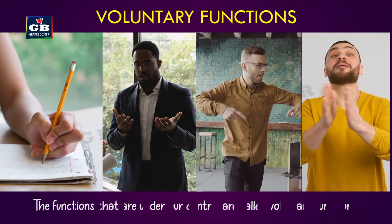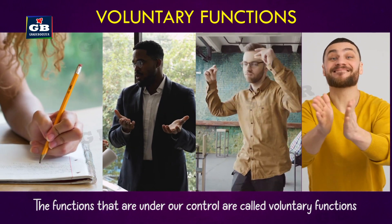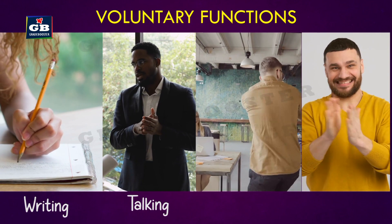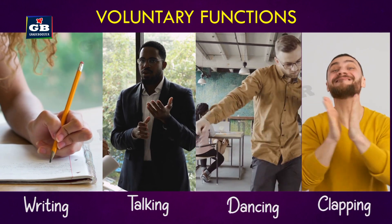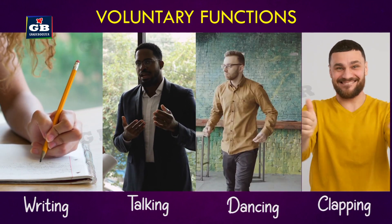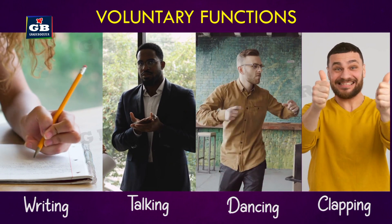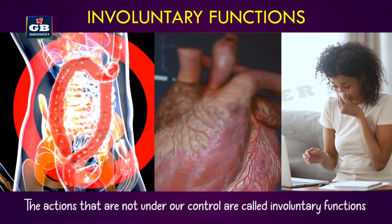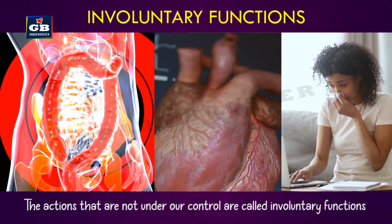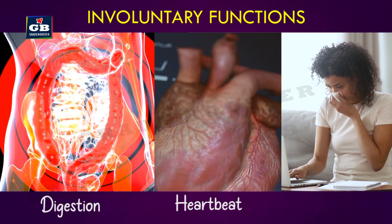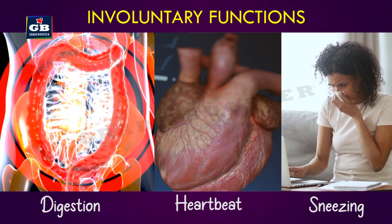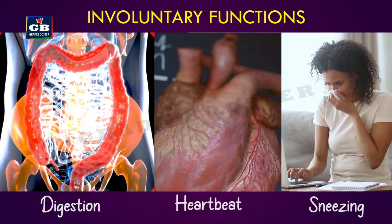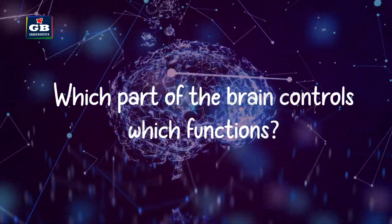Our body functions are of two types: voluntary and involuntary. The functions that are under our control are called voluntary functions — writing, talking, dancing, and clapping are examples. Actions not under our control are called involuntary actions; digestion, heartbeat, and sneezing are examples of involuntary actions controlled by the brain.